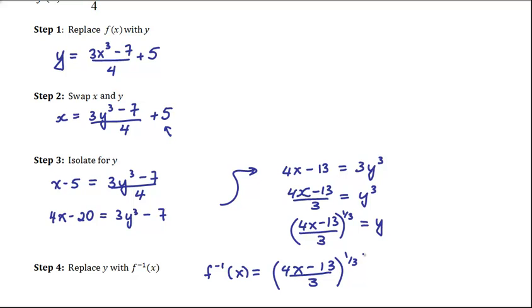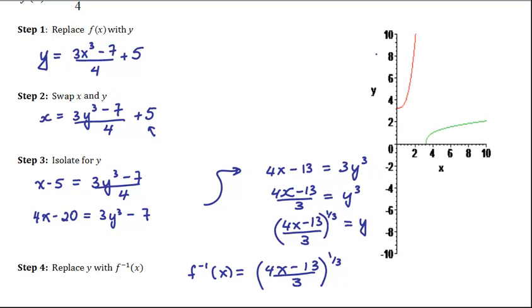In summary, we took our function and replaced f(x) with y. And then we swapped x and y, because the inverse function essentially switches your independent variable with your dependent variable. And then you isolate for y so that you actually have your new function. And then once you have your new function, you can replace y with f⁻¹(x). To graphically show what was going on here,